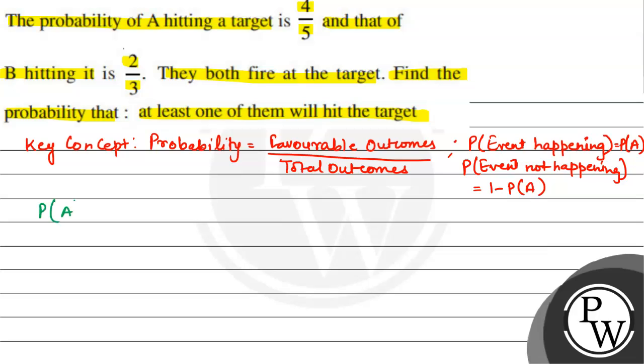Probability of A hitting the target is 4 by 5. So probability of A not hitting the target is 1 minus 4 by 5, which is 1 by 5. Similarly, probability of B hitting the target is 2 by 3 and probability of B not hitting the target is 1 minus 2 by 3, which is 1 by 3.